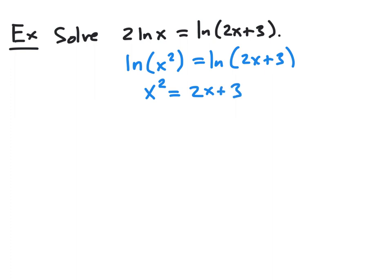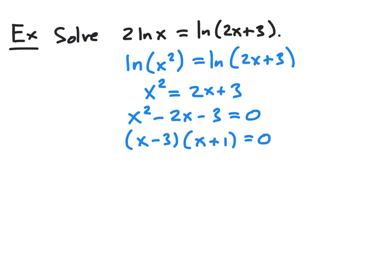This is a quadratic equation. We solve it by moving all terms to one side — subtracting 2x and 3 — to get x squared minus 2x minus 3 equals 0. We can factor this as (x minus 3)(x plus 1) equals 0. Setting each factor equal to 0 gives two potential solutions: positive 3 and negative 1.